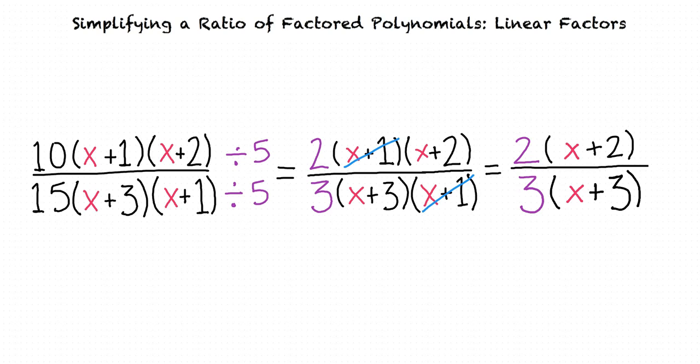So, to simplify a ratio of factored polynomials, we can cancel like factors of the polynomials in the numerator and the denominator. Right. Nice job.